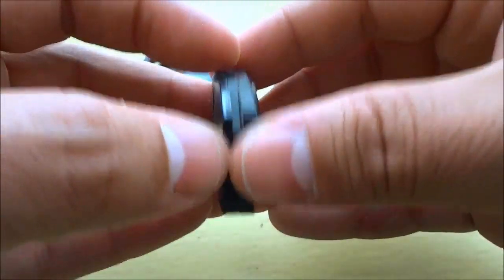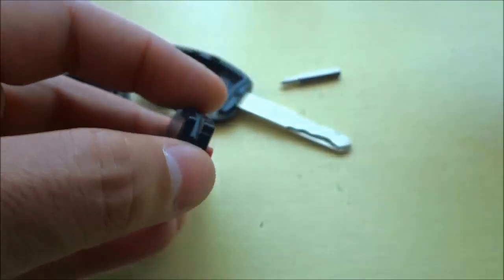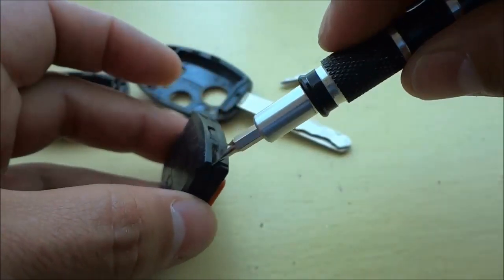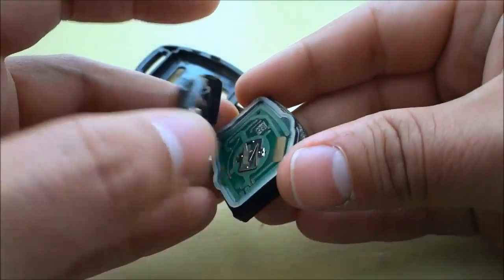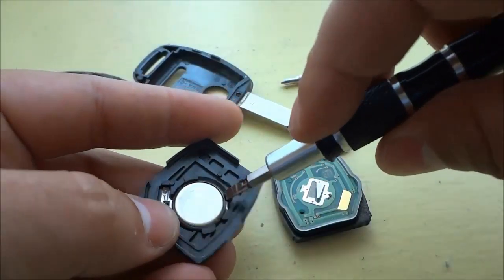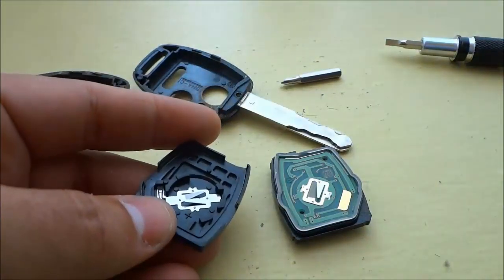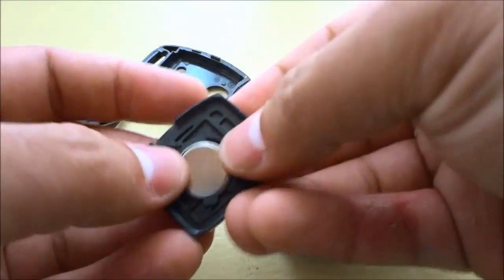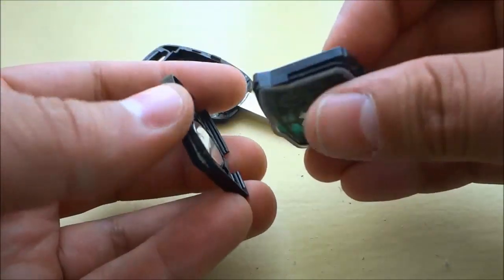You can either use your fingers to pry it apart or the flathead screwdriver. I'll show you the way with the flathead. Simply stick the flathead in there and twist it and it will pop both pieces off. Now we are going to remove the old battery just like that and replace it with the new battery. Pop it into place and now you can reassemble everything.